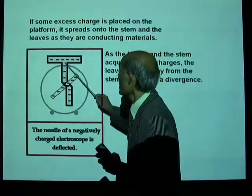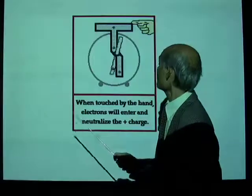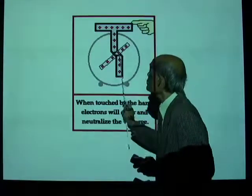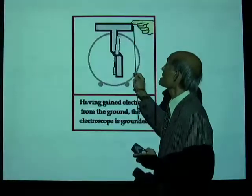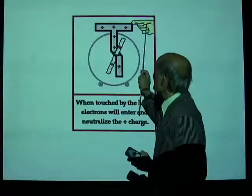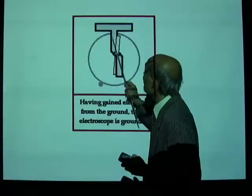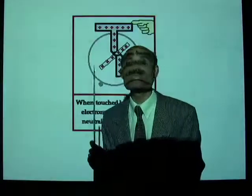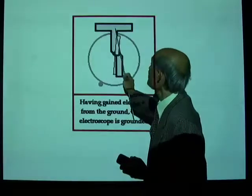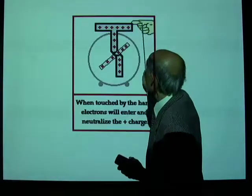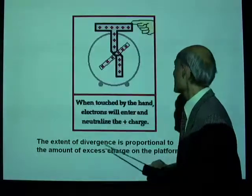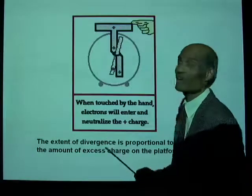Looking at it again: when an amount of positive charge is placed on the electroscope, the leaves diverge. When you touch it, the positive charges do not move away — instead, negative charges move in to neutralize the positive charges. Motion is associated only with negative charges. Positive charges cannot move away. If you touch a positively charged object, negative charges from the earth will come in and neutralize it.